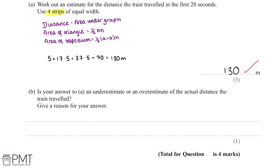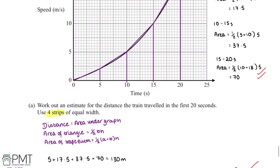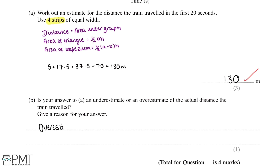Is your answer an underestimate or an overestimate of the actual distance the train travelled? Give a reason for your answer. Looking back at the graph, the shape of the graph is curved. However, when we worked out the area we also included the space between the trapezium and the curve. Therefore our answer to part a is an overestimate — because we included the area between the trapezium and triangle and the curve.